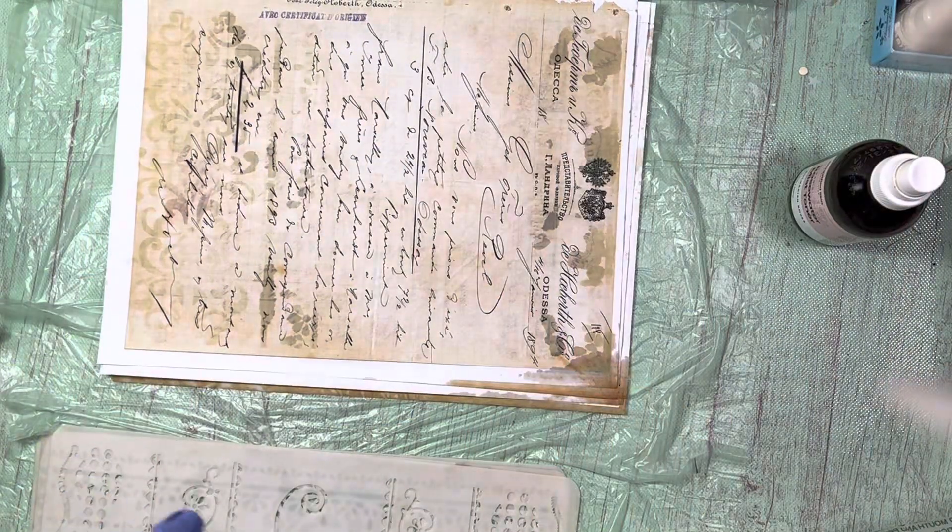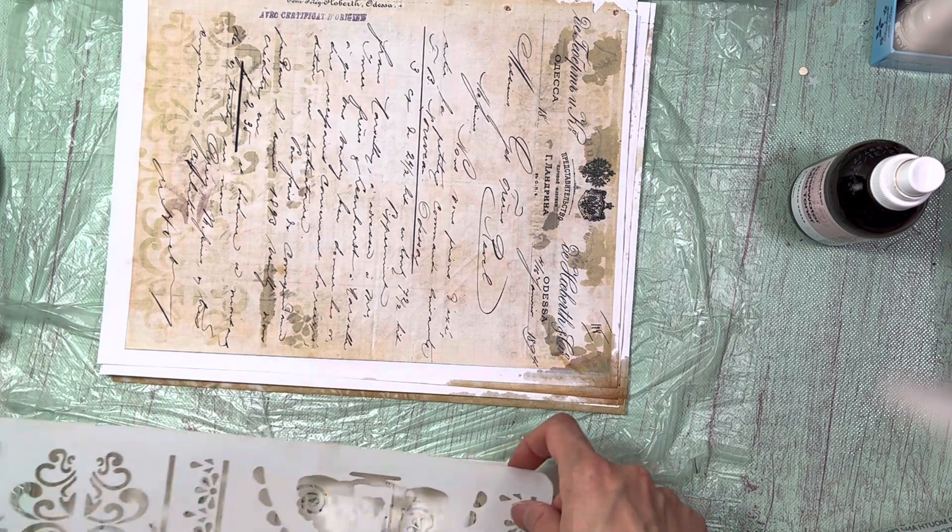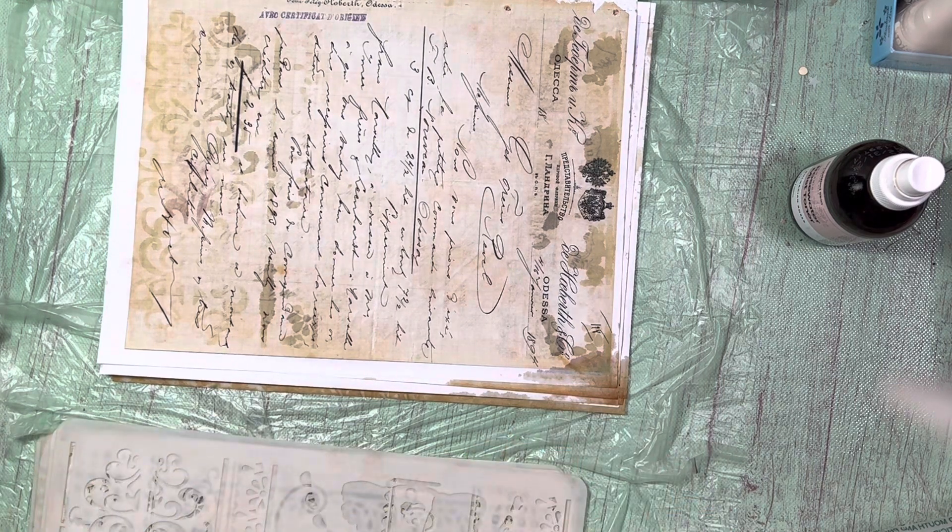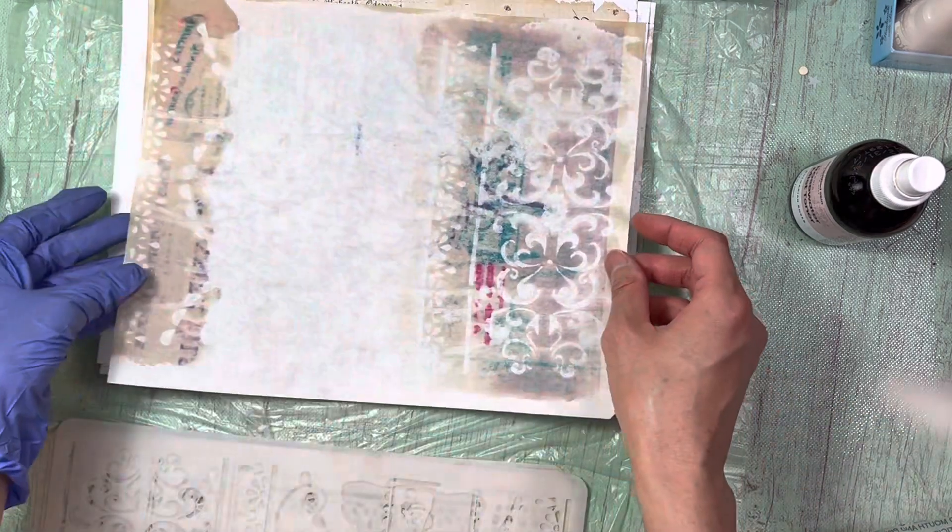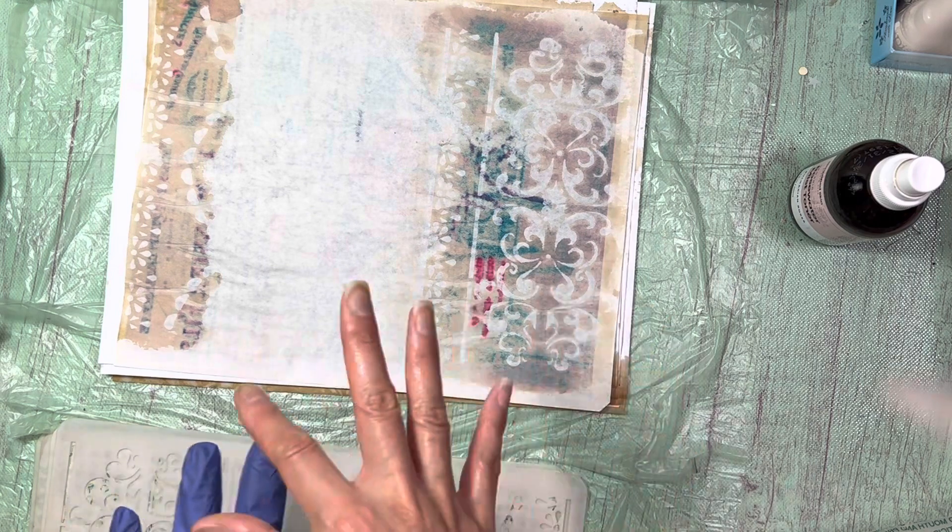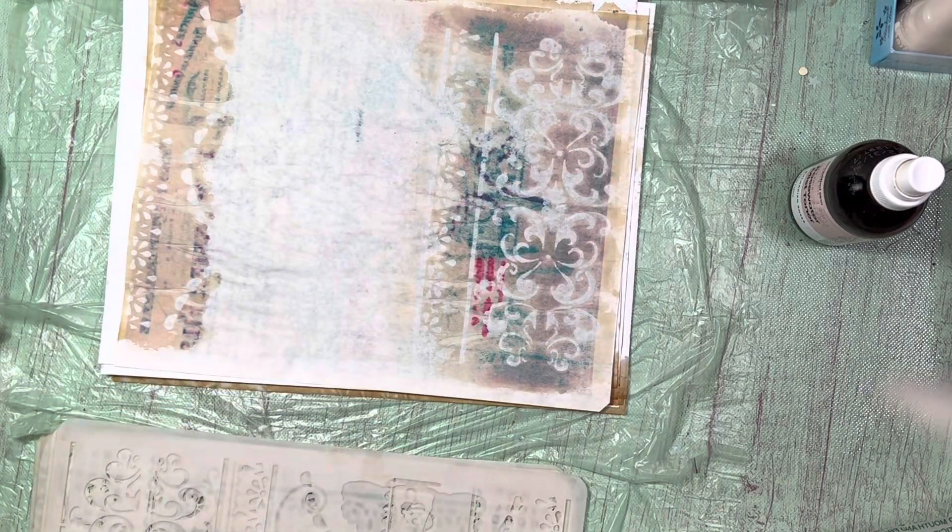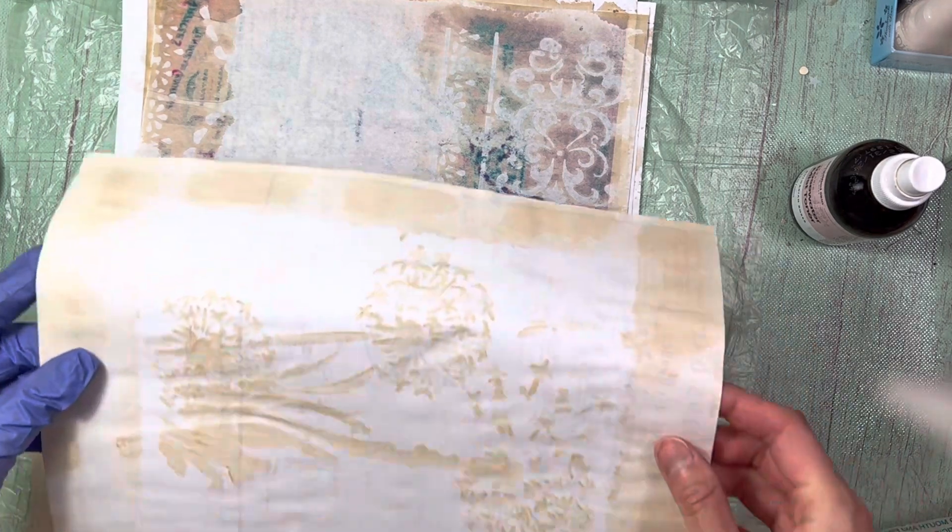All right. So you know, the paper that lies on top of the stencil, that's where you get the clearest print like this one. This was laying on top of the stencil like after you spray it. So that's where the design comes through the most. This one was laying on the bottom.